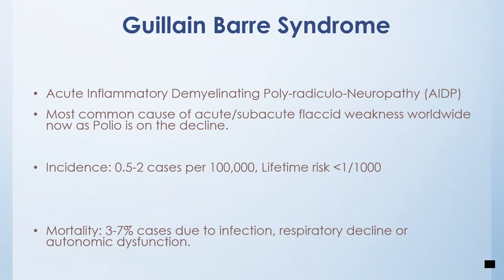Our first important neuropathy to discuss is acute inflammatory demyelinating polyradicular neuropathy, or what we commonly call Guillain-Barré syndrome — the most common cause of acute to subacute flaccid weakness worldwide, now that polio is on the decline. Its incidence is 0.5 to 2 cases per hundred thousand, and lifetime risk is less than one per thousand. Mortality is three to seven percent due to infections, respiratory decline, or autonomic dysfunction.